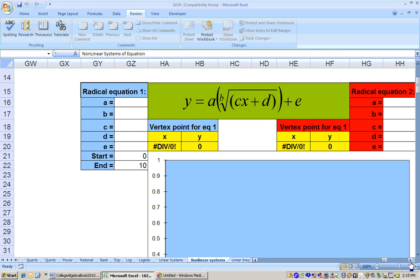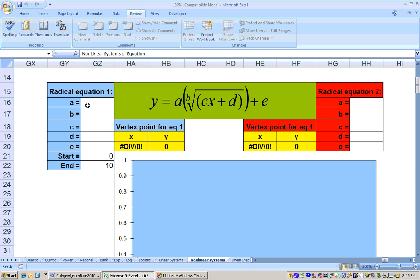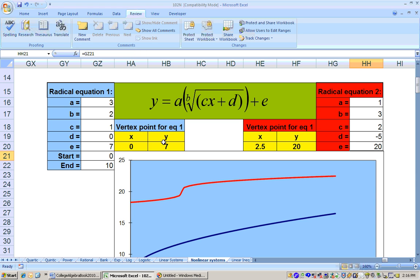And now this gives you a place where we can type in our coefficients for our two radicals. So I typed in the coefficients for both of these equations. The first equation was y equals 3 times the square root. The a was 3. Since it was square root, the b is 2. It was the square root of x, so the c is 1. There was no other constant under here.